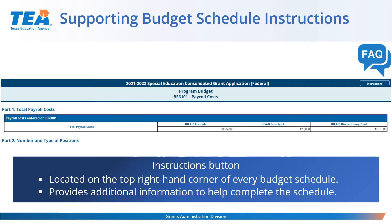Supporting budget schedule instructions are a great resource available to grantees. There is an instructions button located in the top right-hand corner of every budget schedule. If you click on it, it opens a new page that provides additional information to help you complete the schedule.